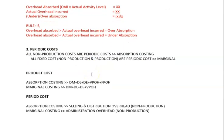The third consideration is periodic cost. A periodic cost means you take the full amount and write it off as an expense in the profit or loss statement — no apportionment. All non-production costs are periodic costs under absorption costing. Under marginal costing, all fixed costs — both non-production and production — are treated as period costs.